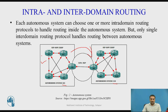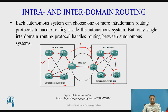An autonomous system can have multiple intra-domain routing protocols to update its routing tables. The intra-domain routing protocols include RIP (Routing Information Protocol), OSPF (Open Shortest Path First), and others. The routing between two autonomous systems is called inter-domain routing, which is handled by exterior routing protocols. One example is BGP (Border Gateway Protocol), which is responsible for routing between two autonomous systems.